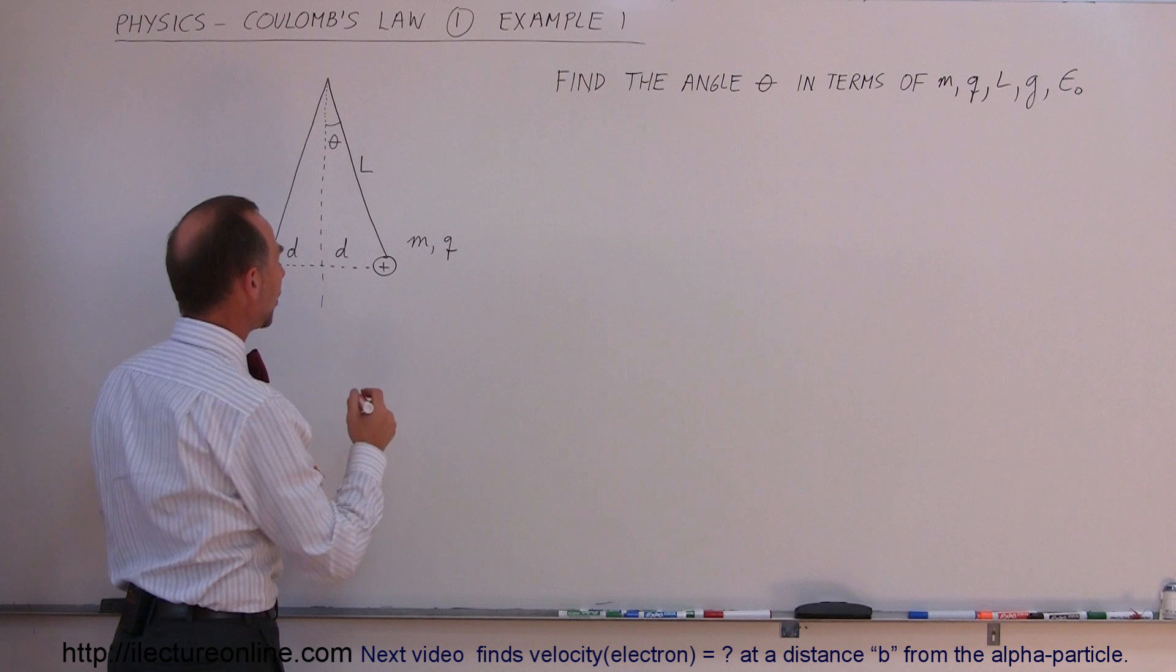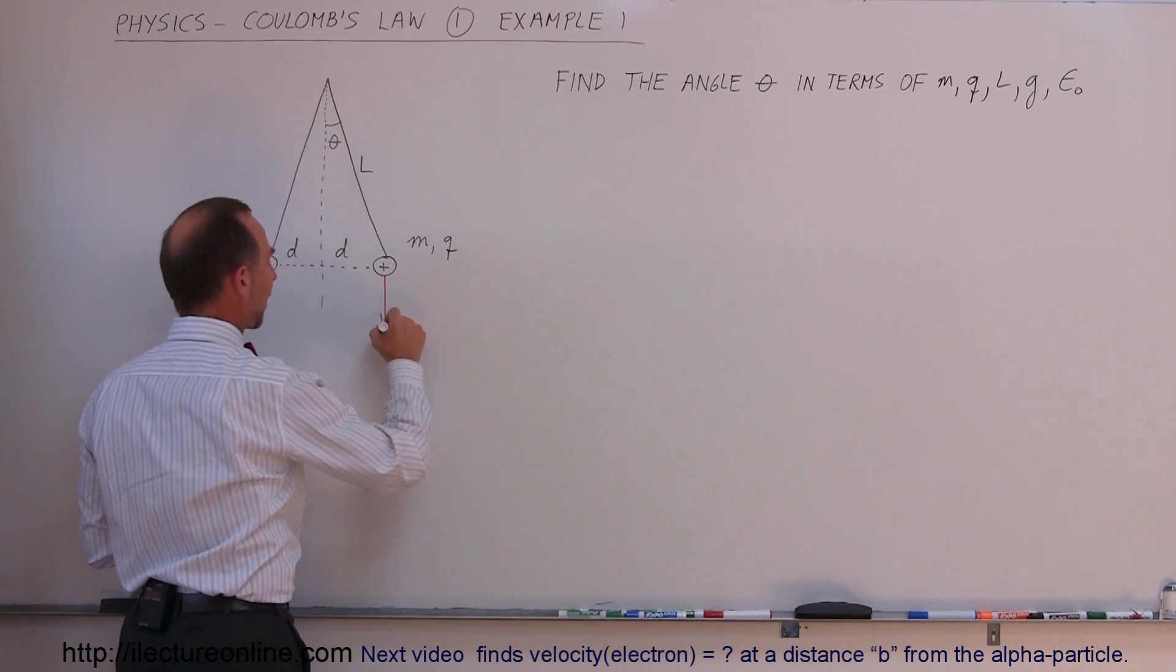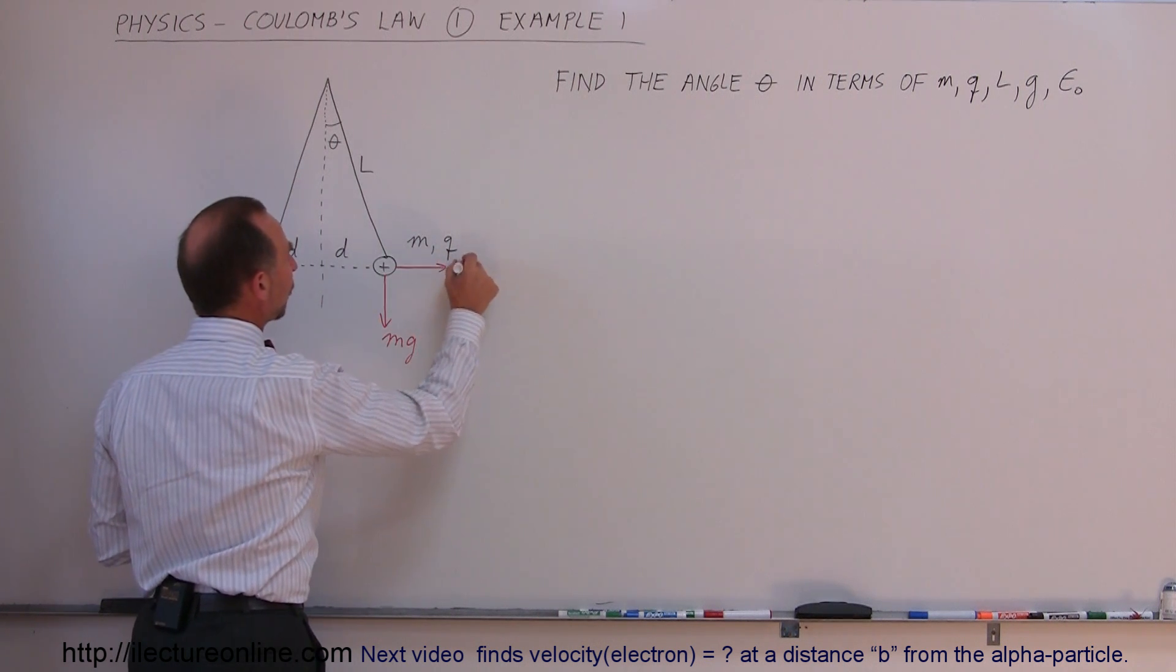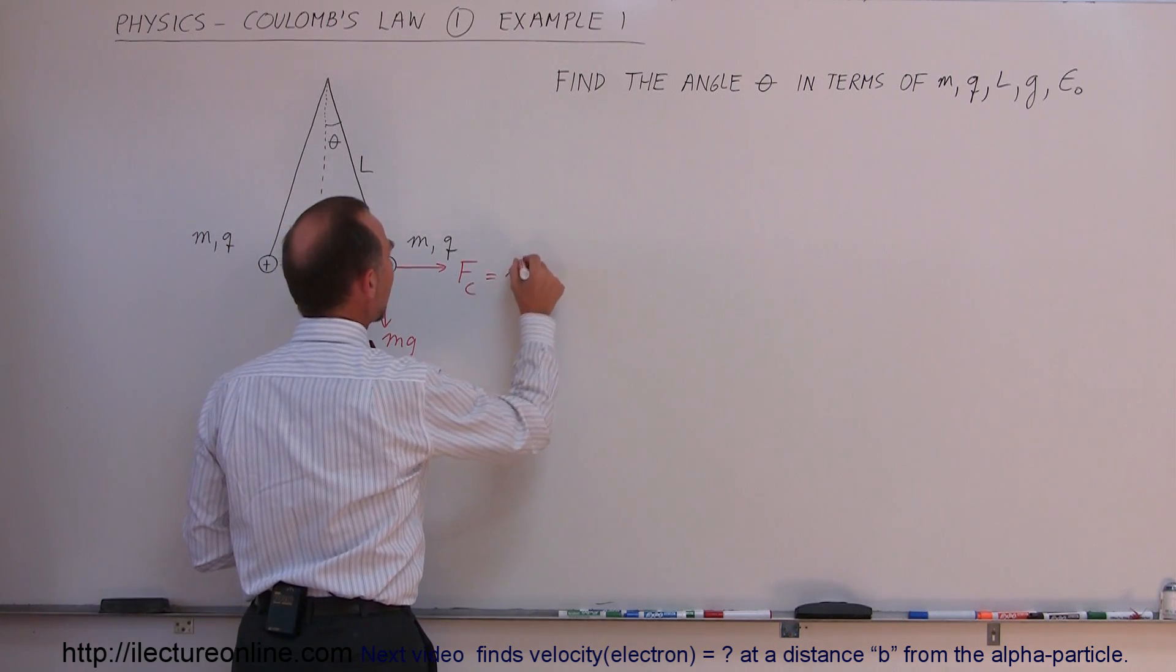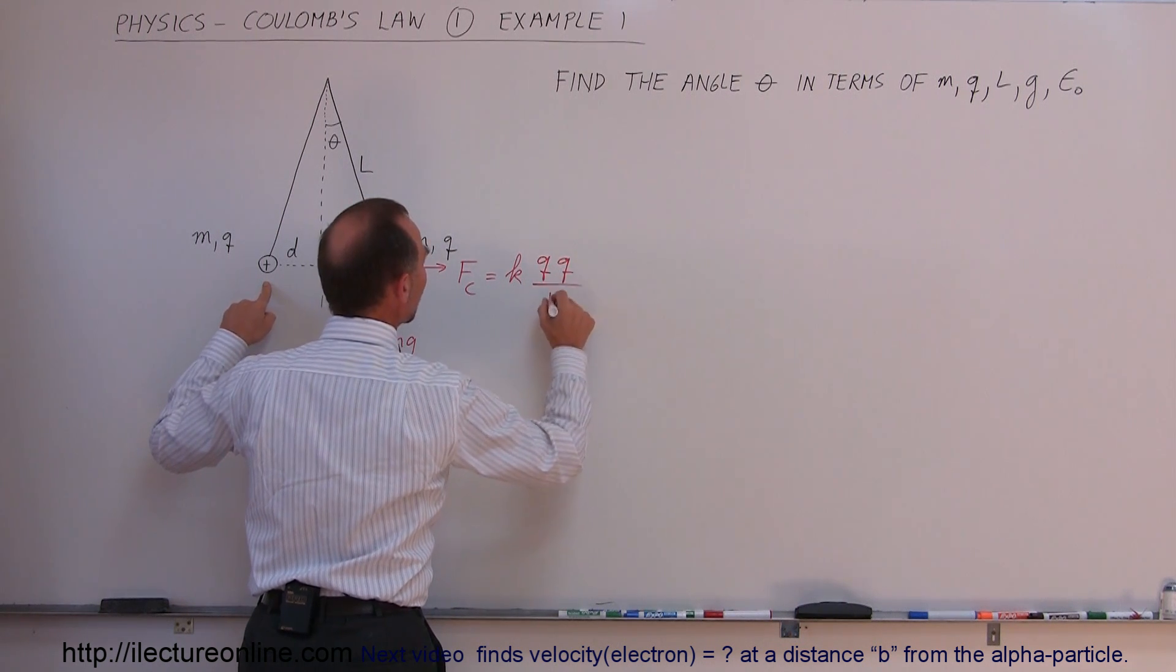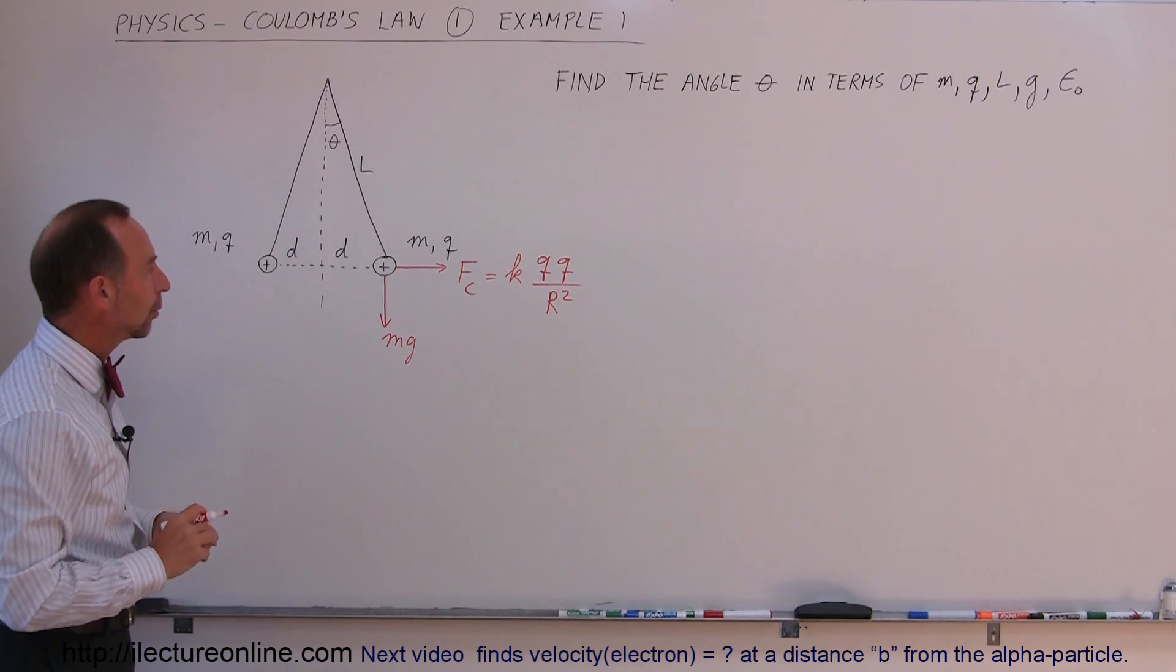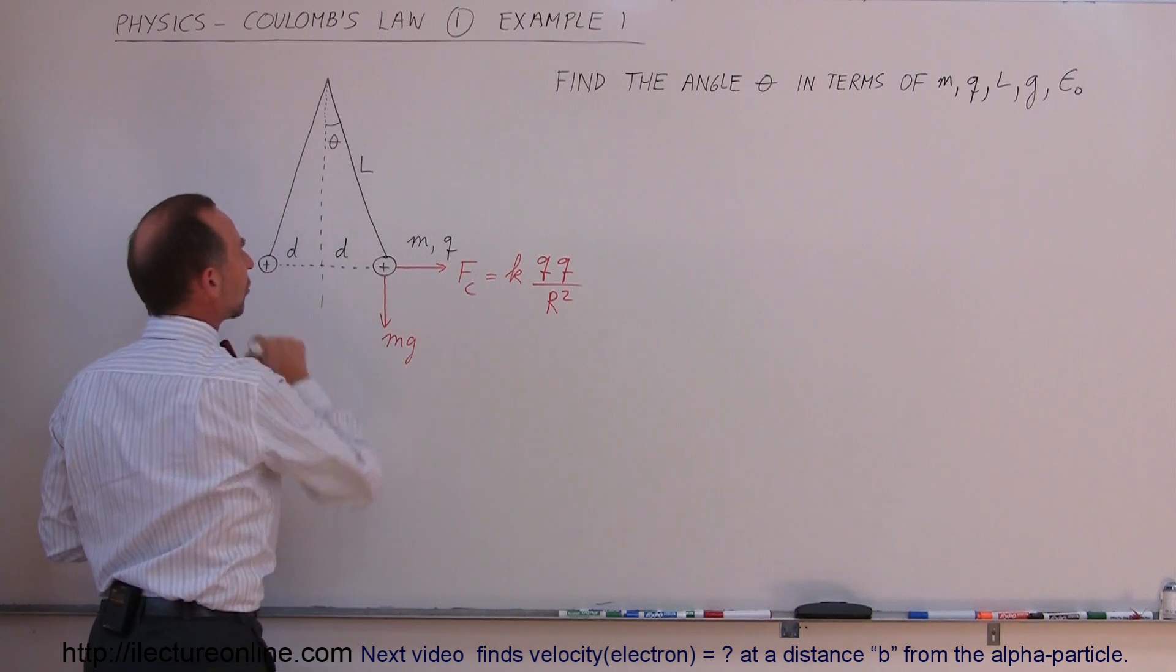Let's go ahead and try to figure that out. First of all, we want to draw in the forces involved. We have the force of gravity pulling straight down, which would be mg, and the Coulomb force F sub C, which can be calculated to be K times the charge of one object times the charge of the other object divided by the distance between them squared. Realizing they both have the same charge.